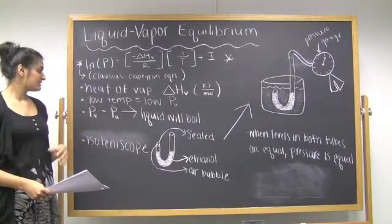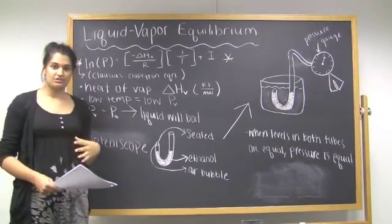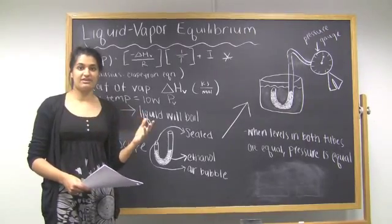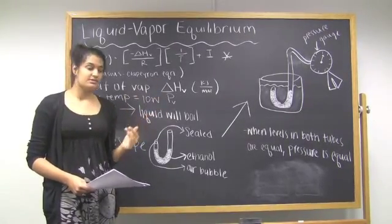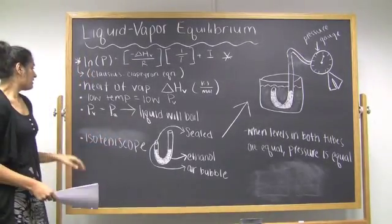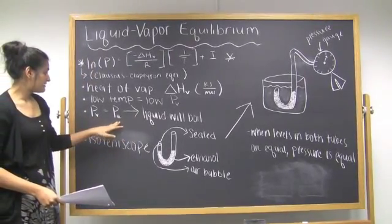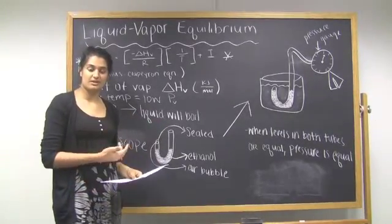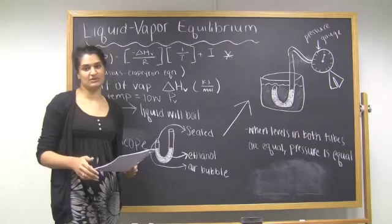Now you should remember from previous lectures that at low temperatures, very few molecules on the surface of the liquid have enough energy to escape. This results in a low vapor pressure as well. When the vapor pressure is equal to the atmospheric pressure, the liquid will boil. And for more information about this, you can refer to your lab packets or your lecture notes.